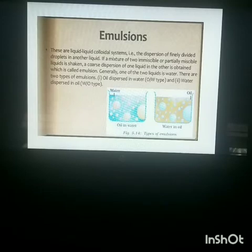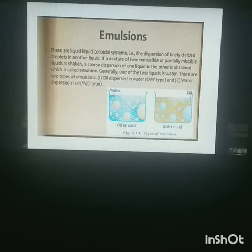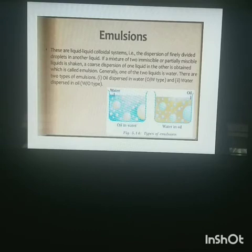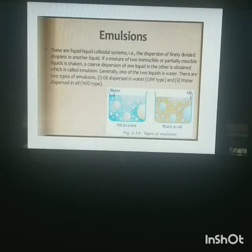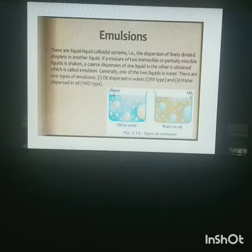The next topic is emulsion. An emulsion is a colloidal system where both the dispersed phase and dispersed medium are liquids. If a mixture of two immiscible or partially miscible liquids is taken and a coarse dispersion of one liquid in the other is obtained, it is called an emulsion. There are two types: oil dispersed in water, and water dispersed in oil — these are the two kinds of emulsion.